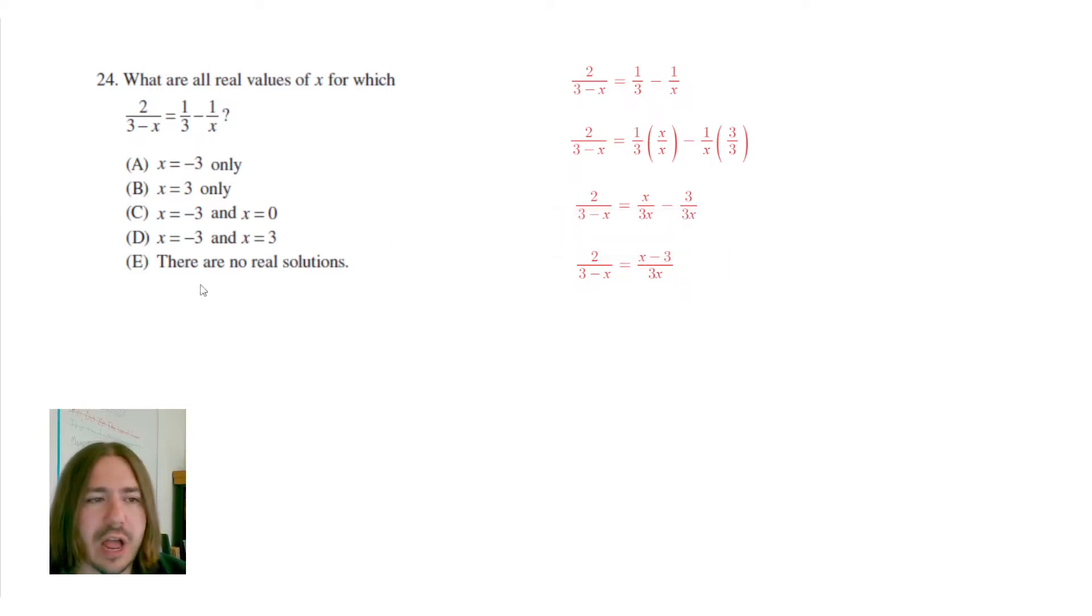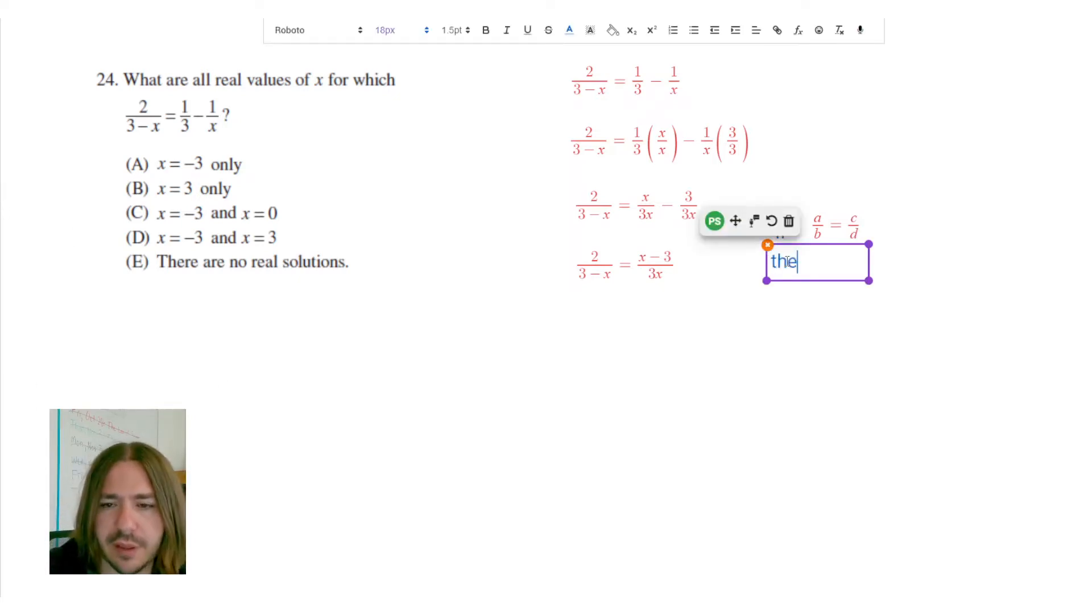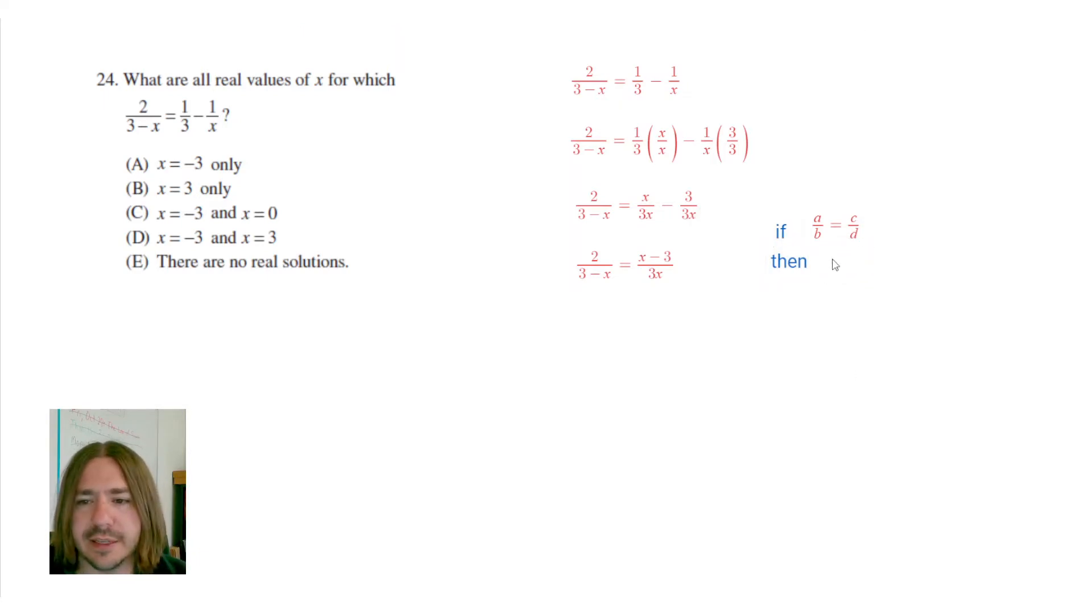Now what we can do is we can use the cross-products property to solve for x. Sometimes it's called cross-multiplication, but basically what it means is if you have a situation where you have a proportion, so you have a proportional relationship, we'll say like a over b equals c over d, then the cross-products property says that we can rewrite this as a times d equals c times b. In other words, we can multiply a times d and c times b and set those two products equal to each other. So that's what we're going to do here.